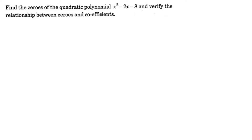Find the zeros of the quadratic polynomial x squared minus 2x minus 8 and verify the relationship between zeros and coefficients. For a quadratic polynomial f of x equal to ax squared plus bx plus c, we need to find the values of alpha and beta, which are the zeros.